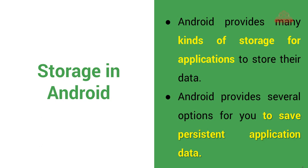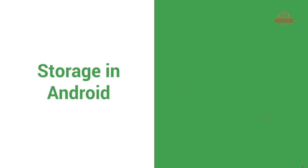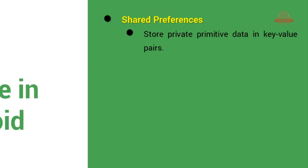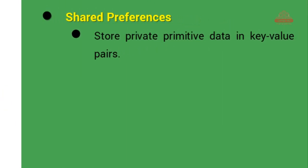क्यों चाहते हैं हम store करना? क्योंकि Android provides several options to save your persistent application data. आपको कितने सारे data store करने होते हैं, इसलिए हम यह persistence storage वाला option यूज करते हैं — permanent, full time store करना चाहते हैं. पहला option आता है जिसको SharedPreference कहा जाता है.